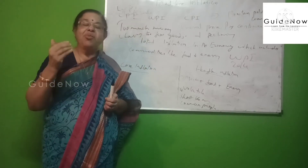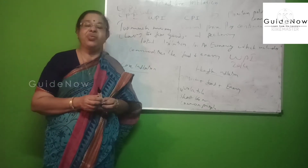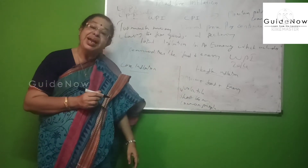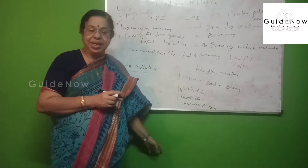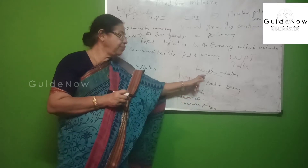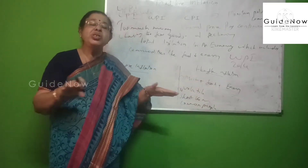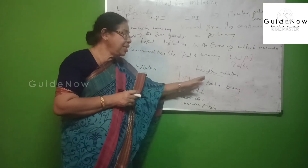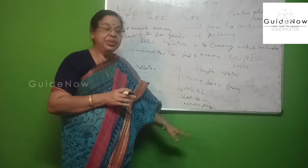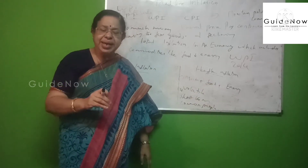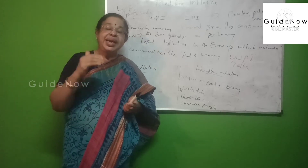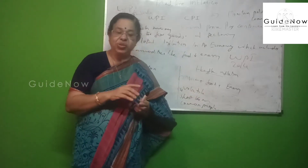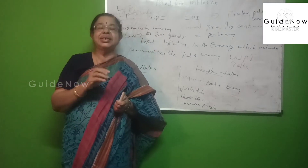Headline inflation varies from one economy to another — it is not constant. In the case of headline inflation, there are several characteristics. One is that headline inflation equals most components plus food plus energy. Most means most of the components are included to determine headline inflation, with special emphasis on food and energy as the two main components. The prices of these two commodities are highly fluctuating.